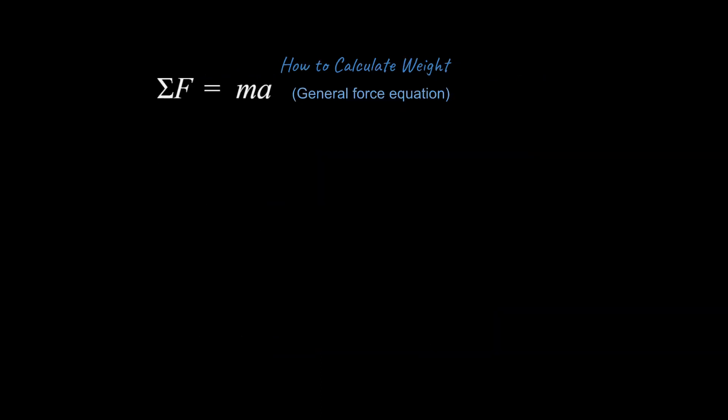So how do you calculate weight? Let's start with the general force equation, the sum of the forces is equal to mass times acceleration. We know that weight is a force, so let's take that general force equation and modify it for the specific weight equation. We'll call it Fg and change out that acceleration for a lowercase g. That lowercase g stands for the acceleration due to gravity here on earth, 9.81 meters per second squared, because of the radius and mass of the earth.